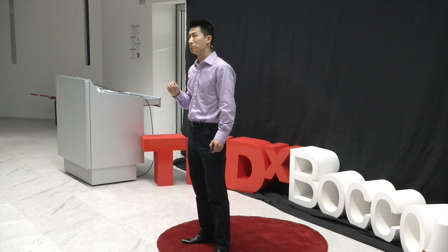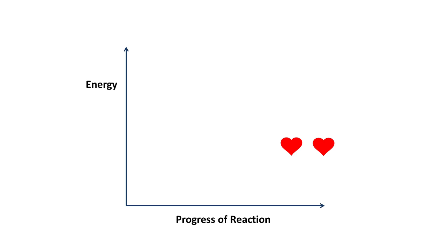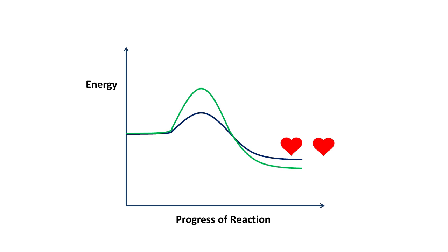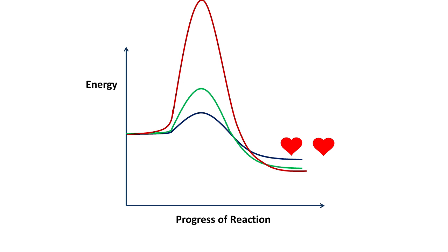For average management students, the curve looks like this — you need a small jump. For average engineering students, the curve looks like this — you need an Olympic jump. And for me, the curve looks like this. I need a rocket to the moon. But at least the potential relationship could still be stable, theoretically.